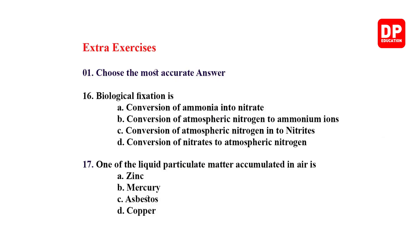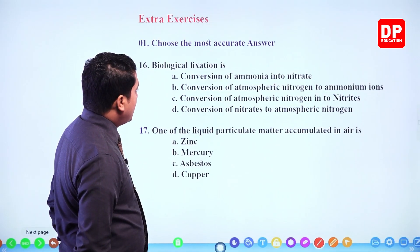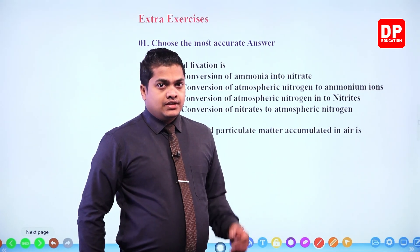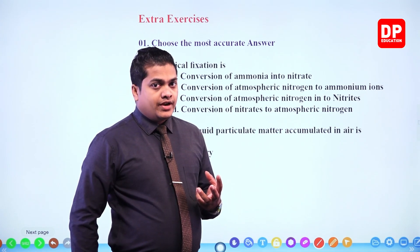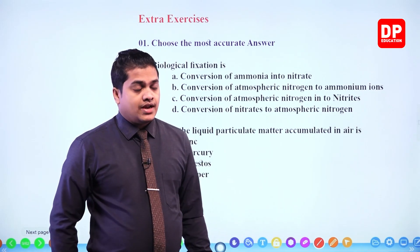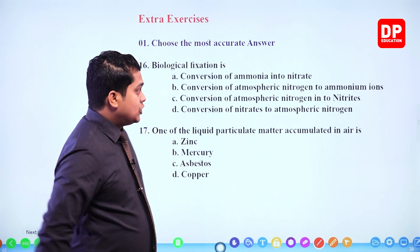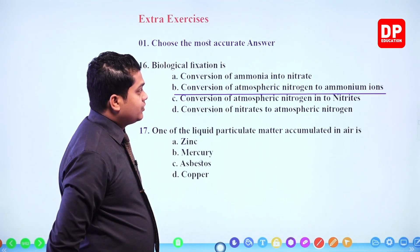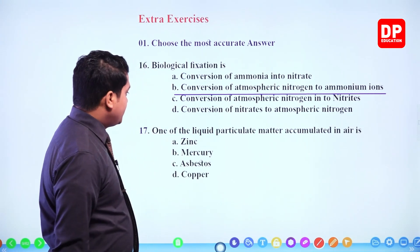Next: biological fixation is — (a) conversion of ammonia into nitrate, (b) conversion of atmospheric nitrogen into ammonium ions, (c) conversion of atmospheric nitrogen into nitrites, (d) conversion of nitrates into atmospheric nitrogen. Biological fixation means bacteria like Rhizobium absorbs atmospheric nitrogen and converts it into ammonium ions. So biological fixation is the conversion of atmospheric nitrogen to ammonium ions.